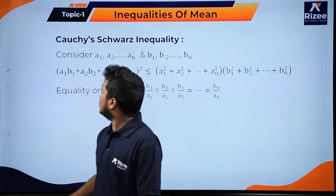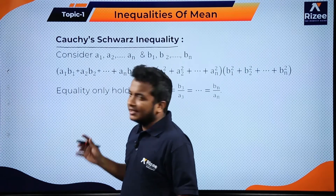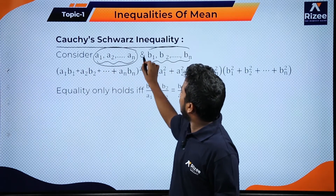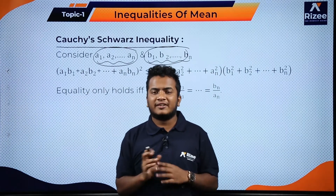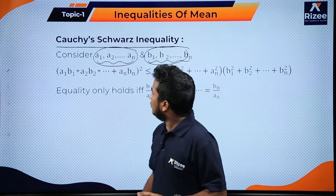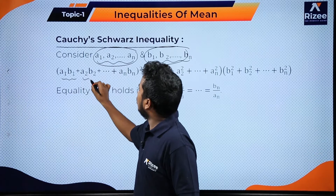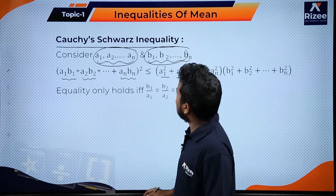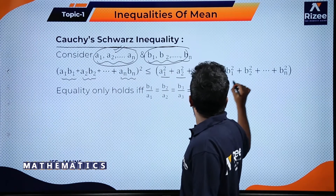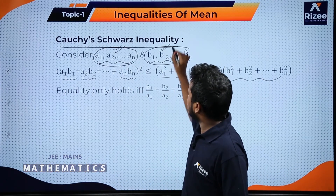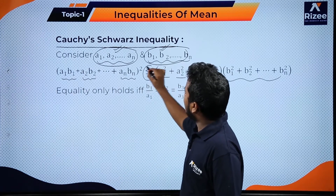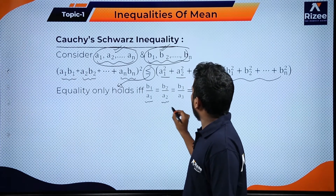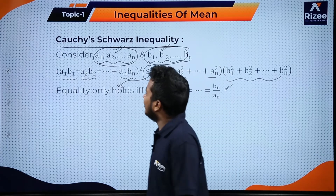The last inequality in this session is the Cauchy-Schwarz inequality. This inequality considers two sets of numbers which can be positive, negative, or zero. It states: (A₁B₁ + A₂B₂ + ... + AₙBₙ)² ≤ (A₁² + A₂² + ... + Aₙ²)(B₁² + B₂² + ... + Bₙ²). Equality holds if and only if B₁/A₁ = B₂/A₂ = ... = Bₙ/Aₙ.